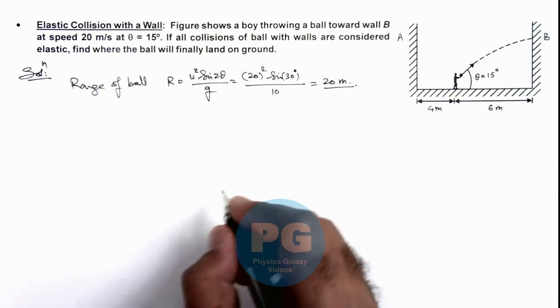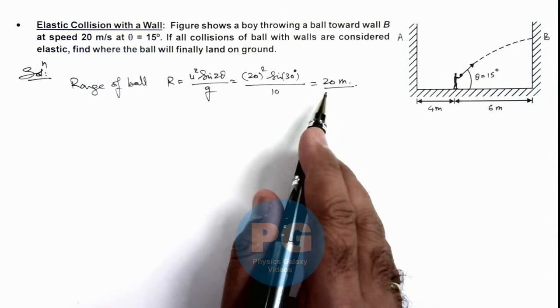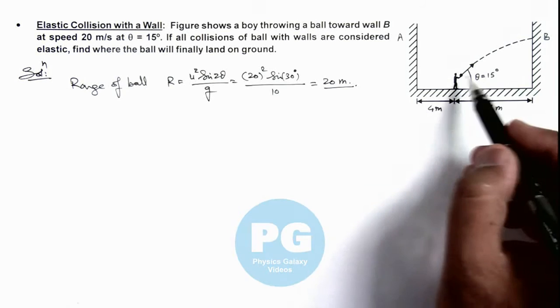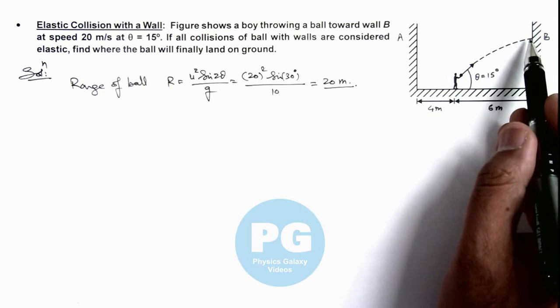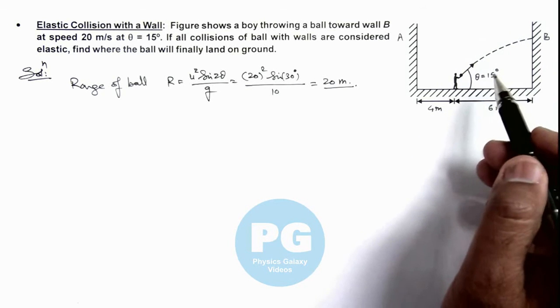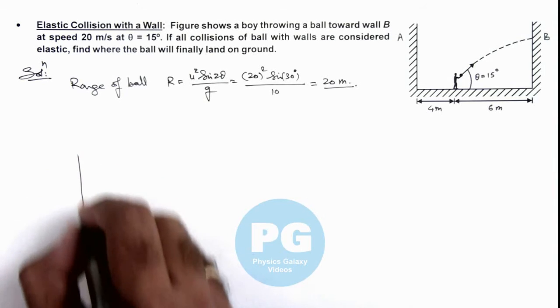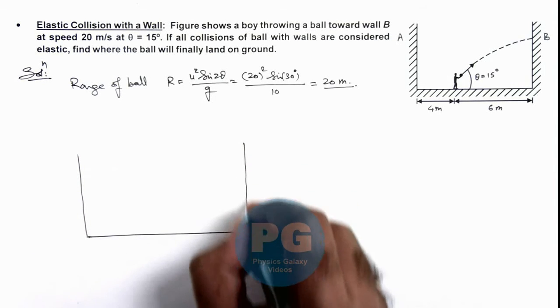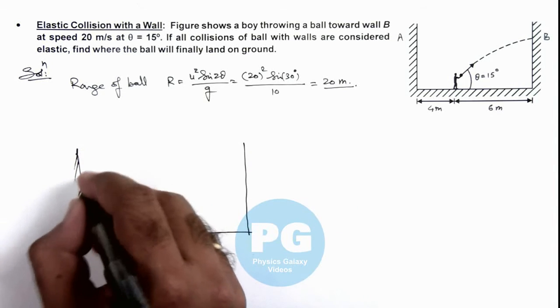So total range of projectile is 20 meters on ground. So here we can say when the ball will collide the wall elastically, it will rebound with the same speed and at the same angle of projection. So here we can draw the situation again to analyze it in a systematic way.